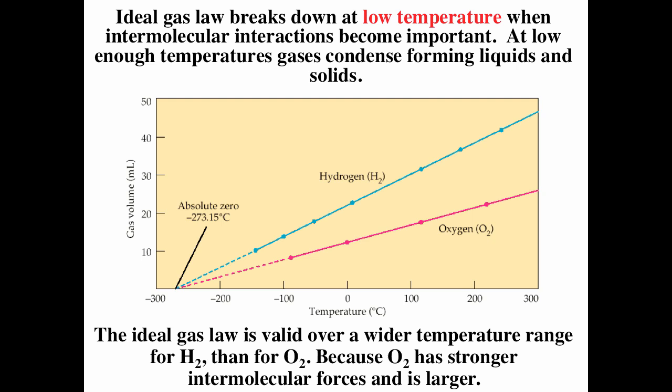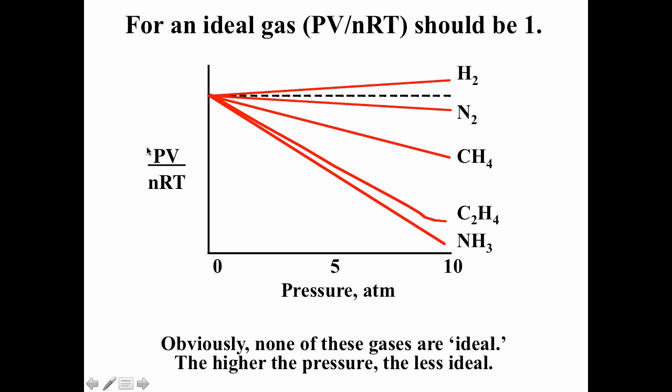PV equals nRT is the ideal gas law. If we divide both sides by nRT, we get PV over nRT is equal to one. And so if a gas is behaving ideally, PV over nRT should be equal to one.